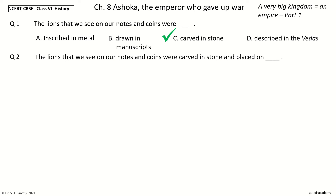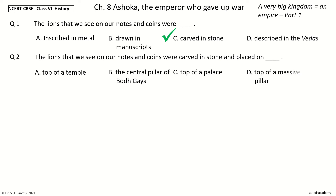Question 2: The lions that we see on our notes and coins were carved in stone and placed on — dash. The options are: top of a temple, the central pillar of Bodhgaya, top of a palace, top of a massive stone pillar. The answer is top of a massive stone pillar.